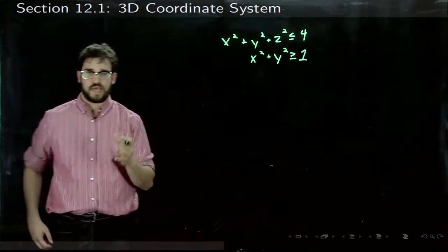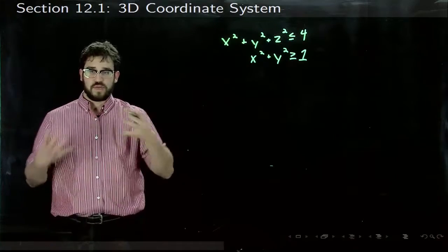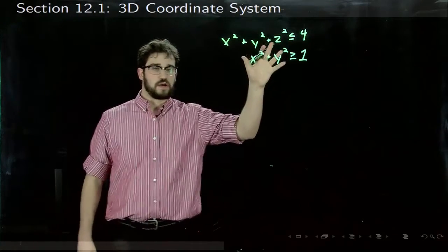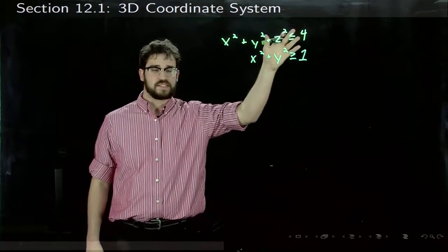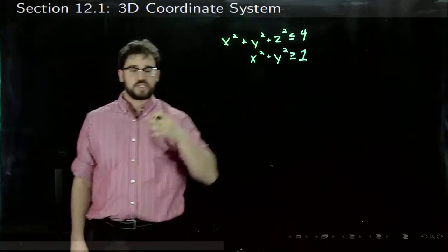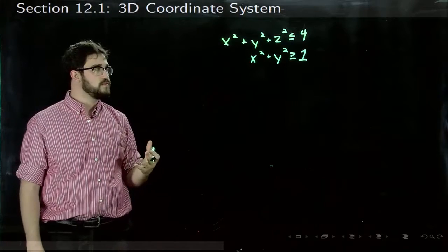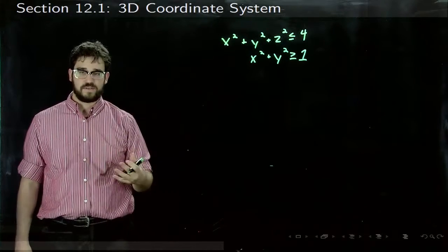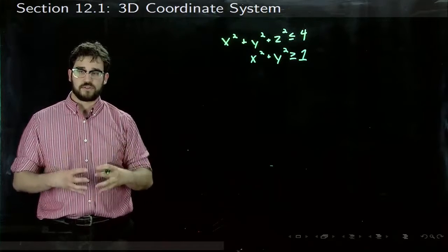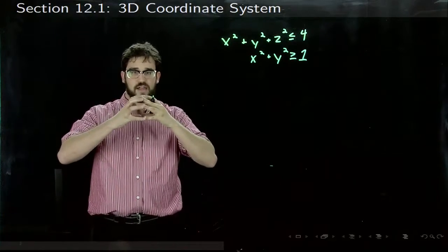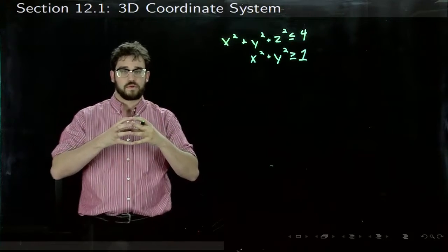What could we say about this region? Well, x²+y²+z² ≤ 4 - we just saw this is the equation of a sphere. Everything smaller will be included in that sphere, so it's actually a solid ball of radius 2.